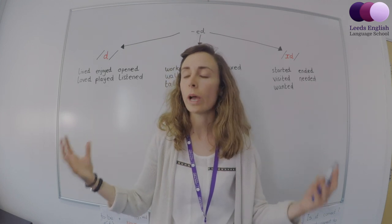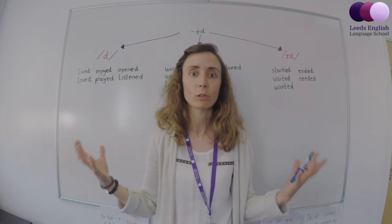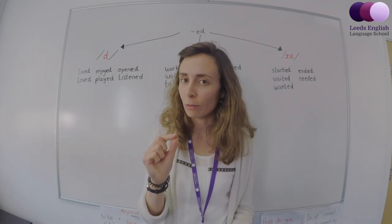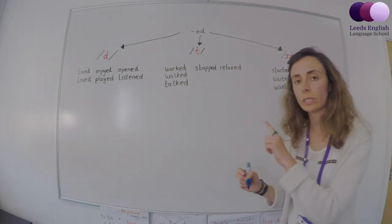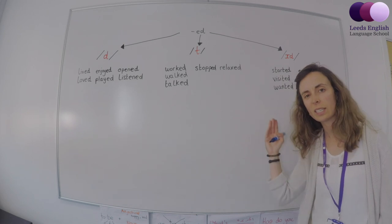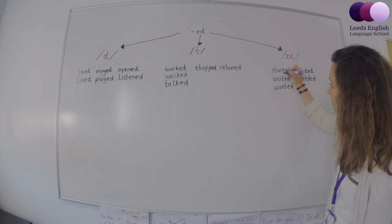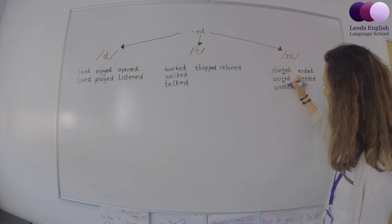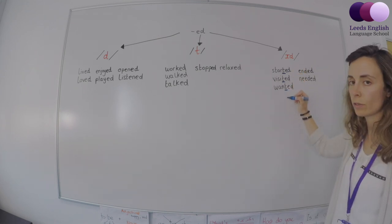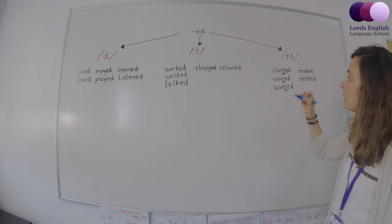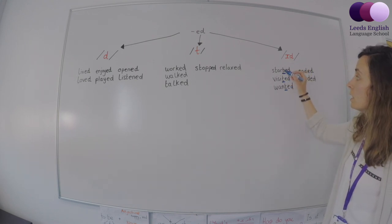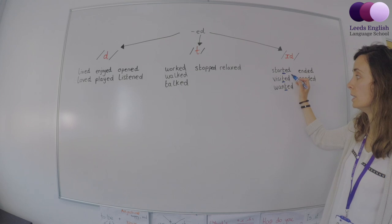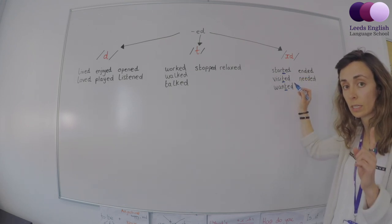You're probably thinking, how can I remember all this? It's so difficult to remember. I have a little way of remembering. I think you'll like it. So can you see a pattern, anything the same? I can show you. What letter is this? T. So if you have T as the last letter, it will be I D. Started. Visited. Wanted. T.